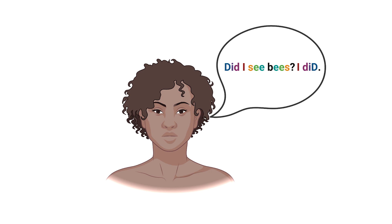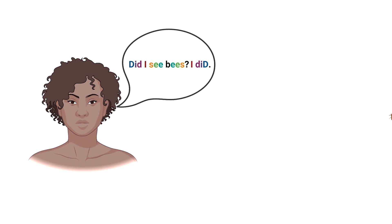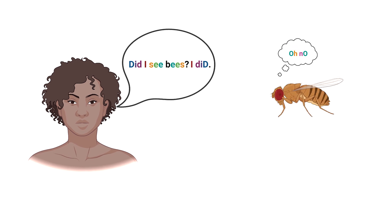This brings us to a core difference between palindromes in human languages and palindromes in DNA. In human languages, palindromes are usually perfect, like the sentence "Did I see bees? I did." Unlike palindromes in human languages, palindromes in DNA can be imperfect. Palindromes in languages have to be perfect in order to have the same meaning when read in either direction — like "noon" and not "noun" — whereas regulatory palindromes are imperfect, meaning that the repeated sequences differ in at least one base pair.